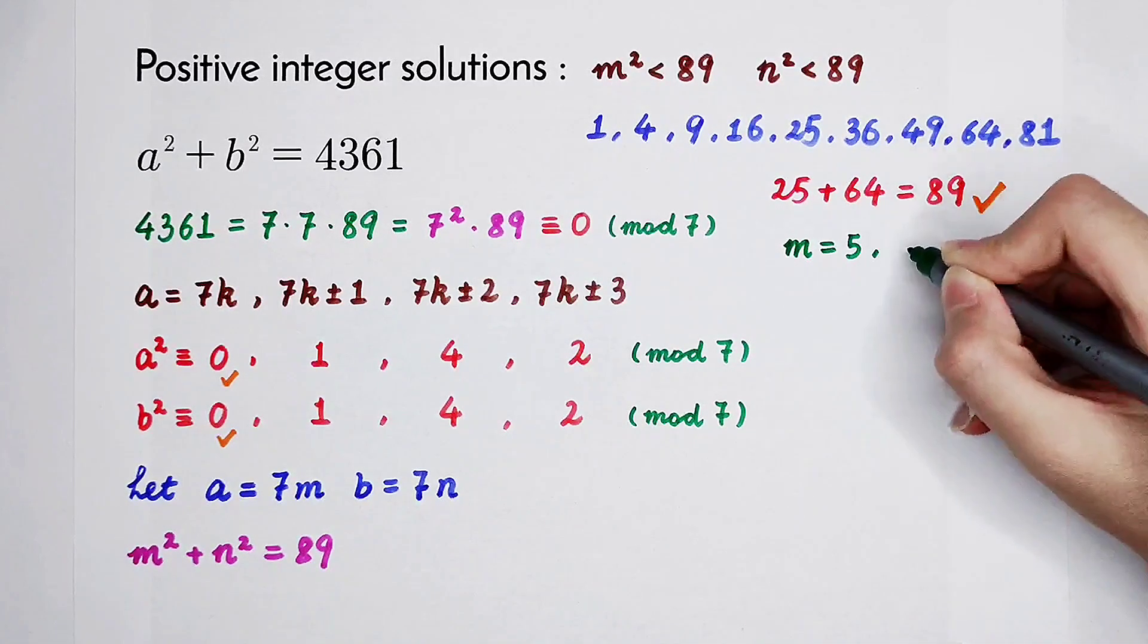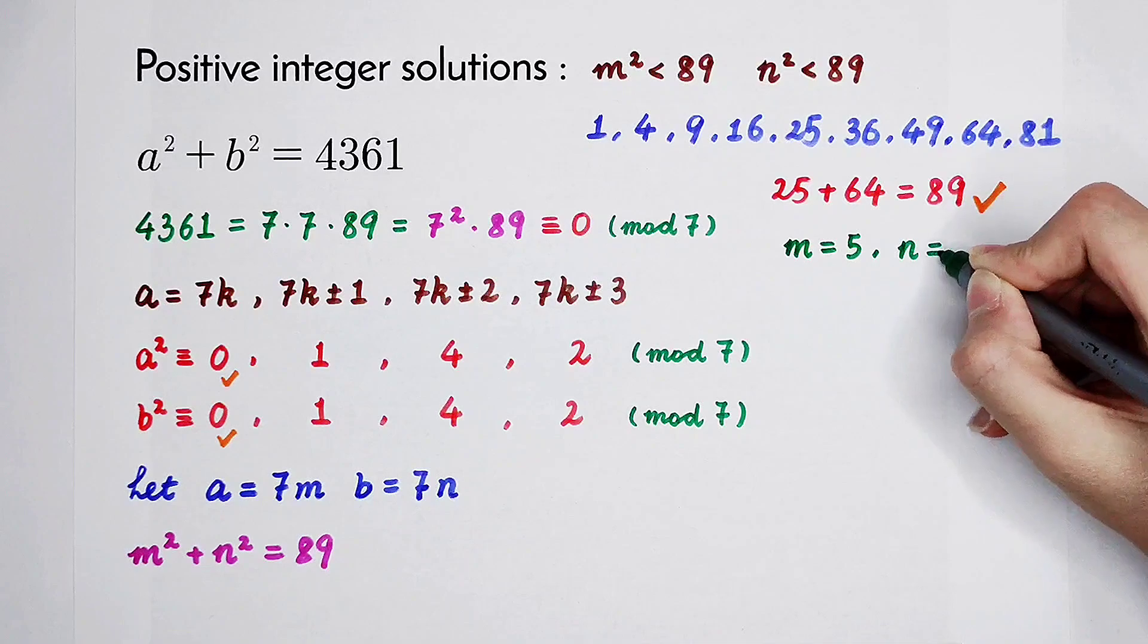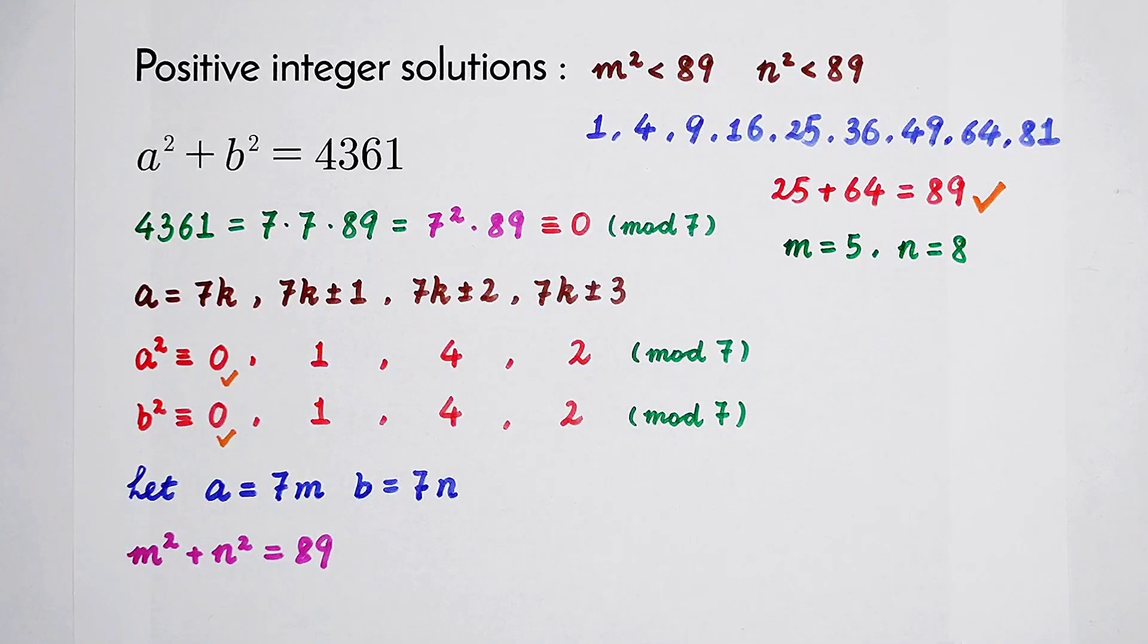m is 5, n is 8. But you have to pay attention that m squared plus n squared has cyclic symmetry. So m equals 5, n equals 8 is just one of the cases.